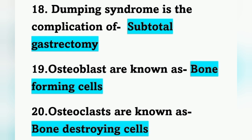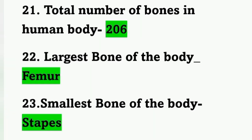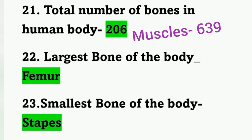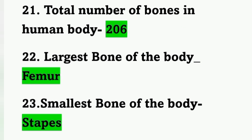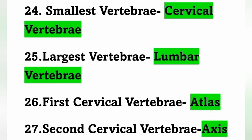Osteoblasts are known as bone-forming cells and osteoclasts are bone-destroying cells. Total number of bones in the human body is 206 and total number of muscles is 639. The largest bone is the femur and the smallest bone is the stapes, which is a middle ear bone.